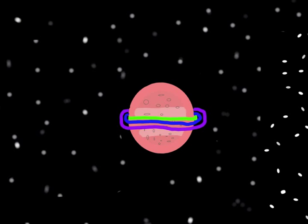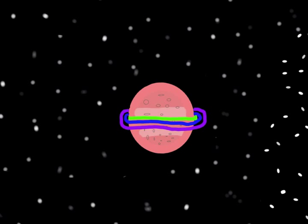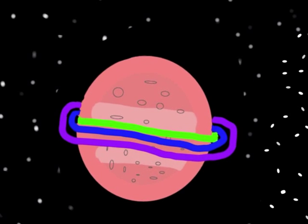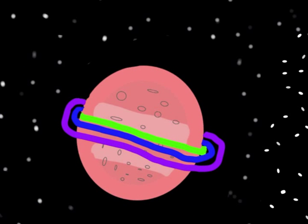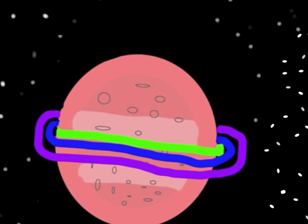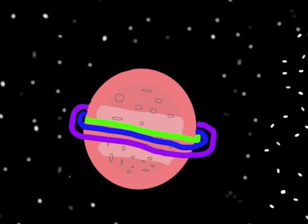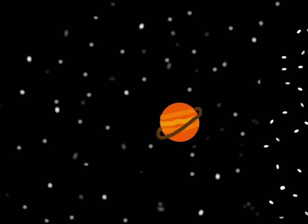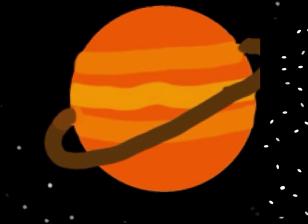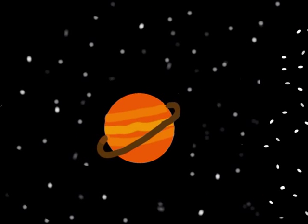On to the outer planets. Here is Jupiter. Jupiter is the biggest gas giant. It is so big it could fit all of the planets inside of it. Jupiter also has rings, but they are too dark to see from Earth. Jupiter is very big but only has a small amount of matter.